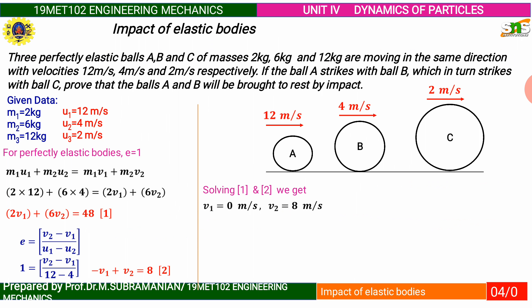For perfectly elastic bodies, E equals 1. Then write down the conservation momentum equation M1 U1 plus M2 U2 equals M1 V1 plus M2 V2. First considering the two balls A and B, substitute all the values. Then form governing equation number 1. That is 2 V1 plus 6 V2 equals 48.